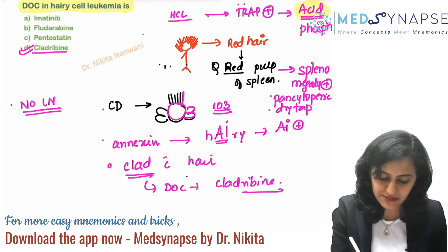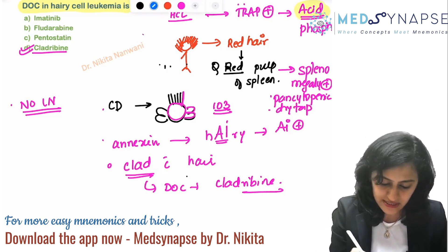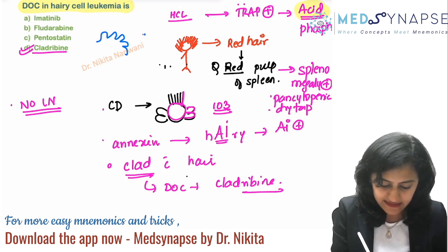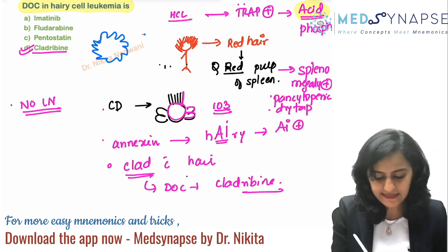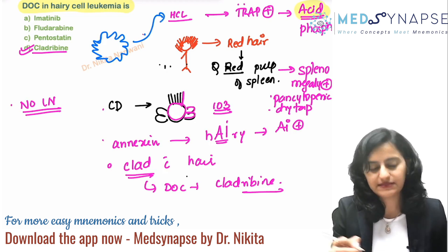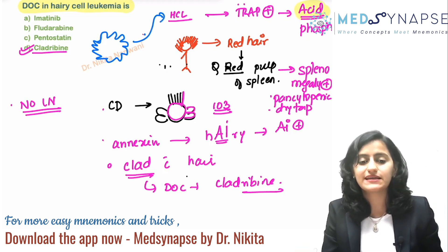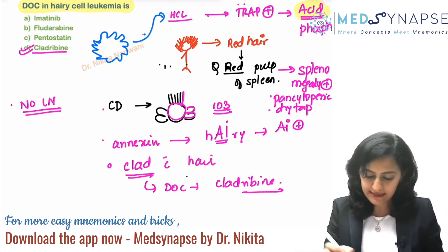There will be splenomegaly with pancytopenia and a dry tap in hairy cell leukemia. If you get an image-based question, where they give you an image of the cell, it has hairy projections — that is the hairy cell, that is hairy cell leukemia.